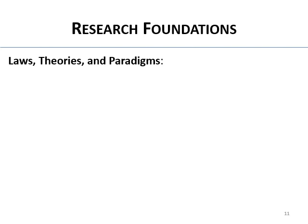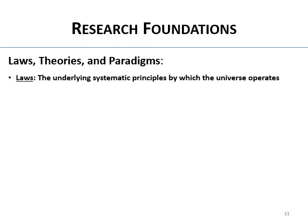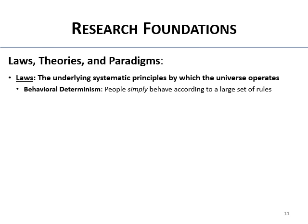Moving on to laws, theories, and paradigms. Laws are the underlying systematic principles by which we think the universe operates — they've figured some out in physics pretty well, because a lot of things are deterministic in the hard sciences. Behavioral determinism says people simply behave according to a large set of rules — if we could find those underlying rules, we could explain all behavior under a deterministic approach.